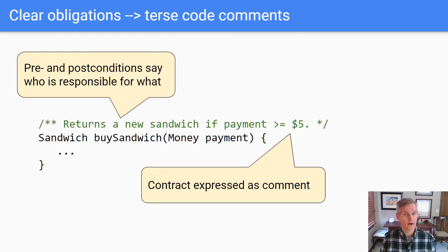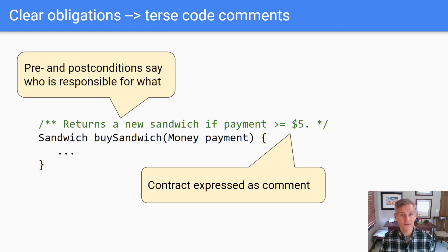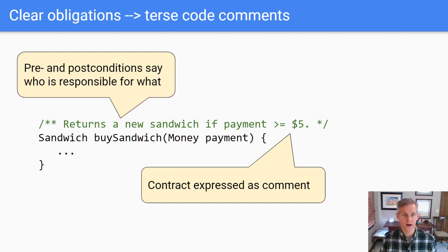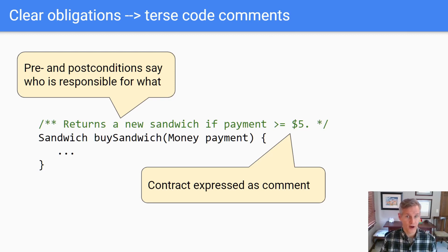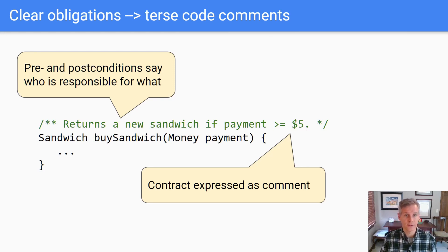Let's return to the sandwich example. When you think about contracts, you design better code, and your code becomes easier to use. Why? Because as you design, you are seeking simplicity. Nobody wants a confusing legal contract in your code. The verbose comments you fear are exactly what drives you to find simplicity.